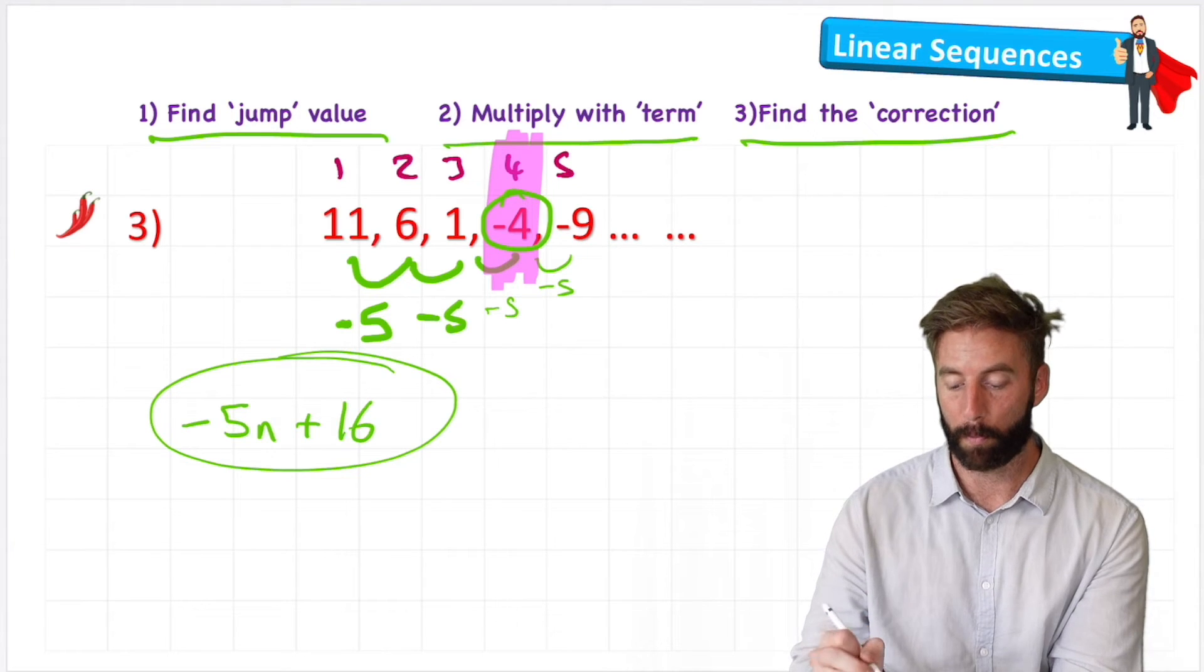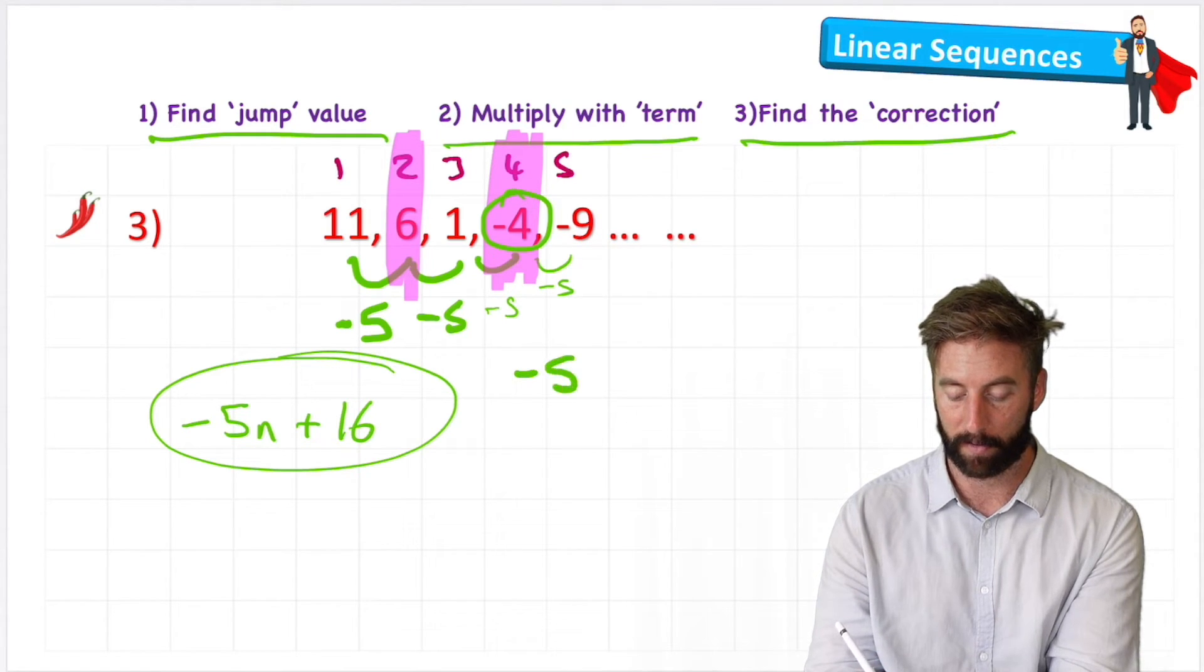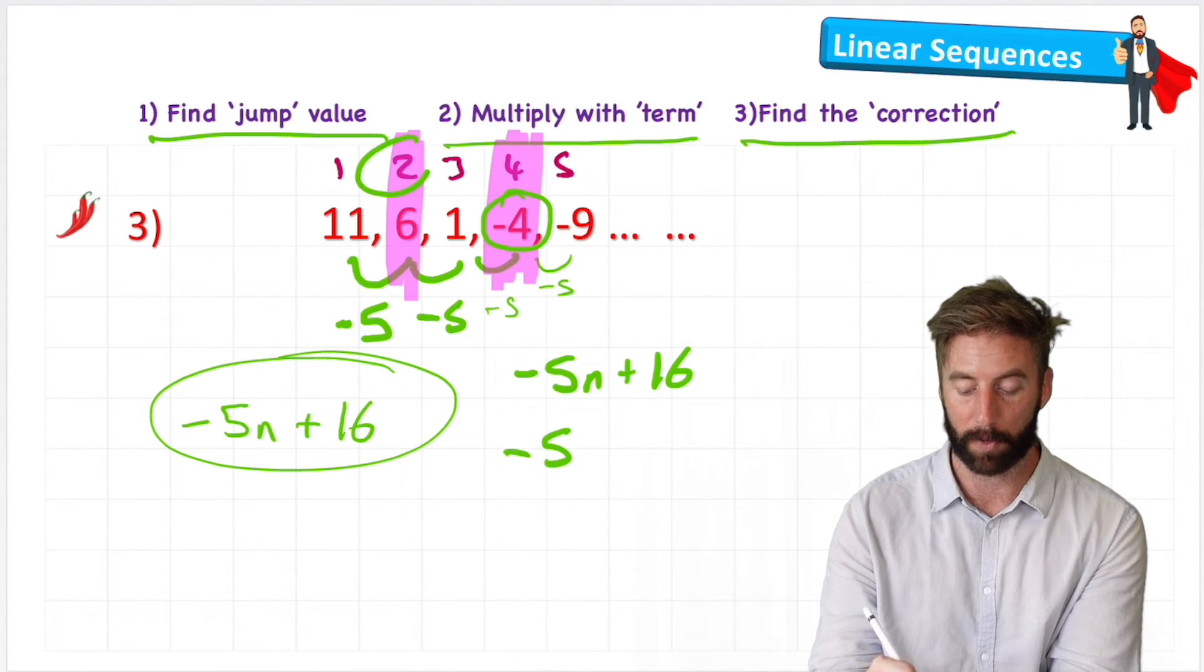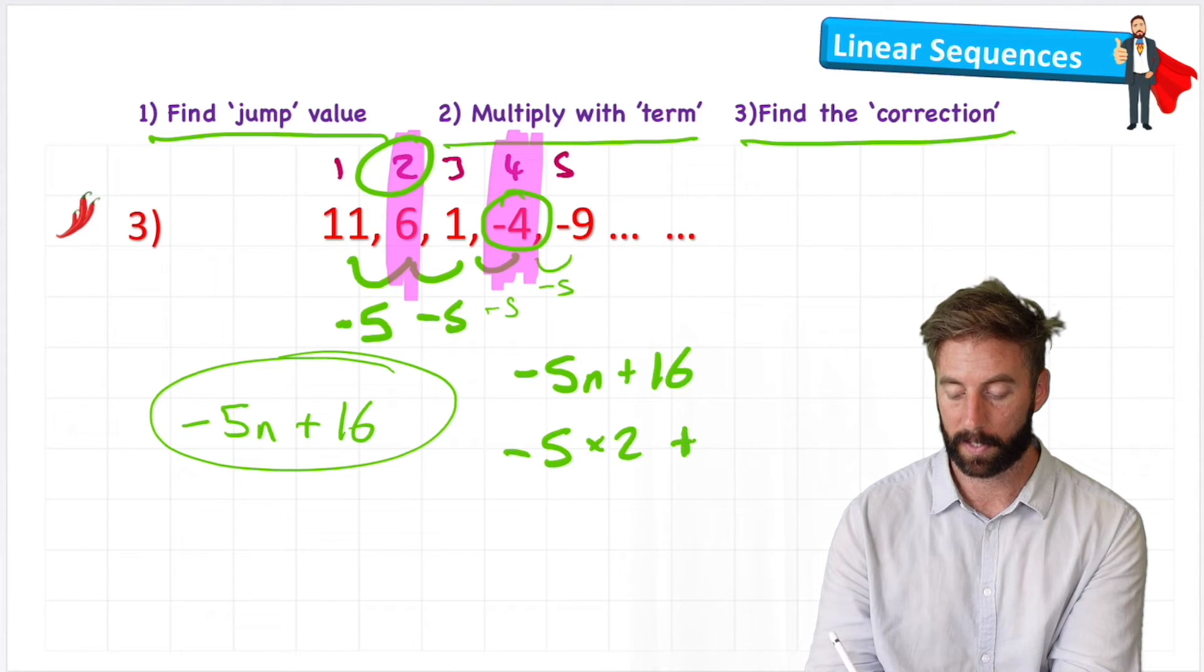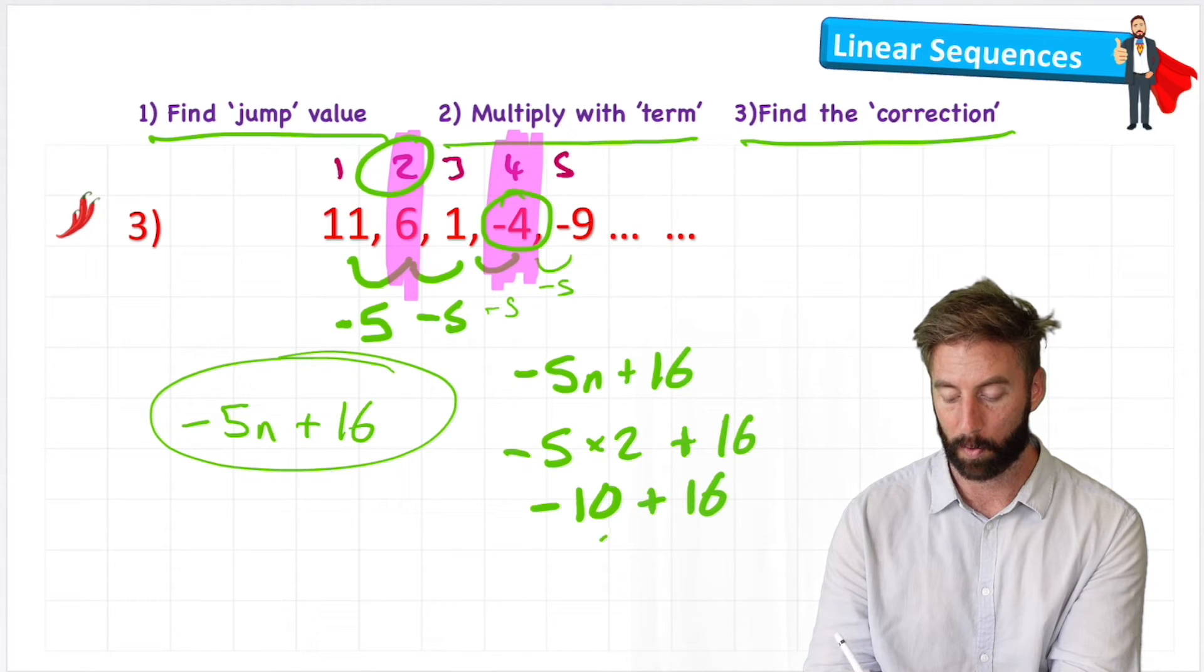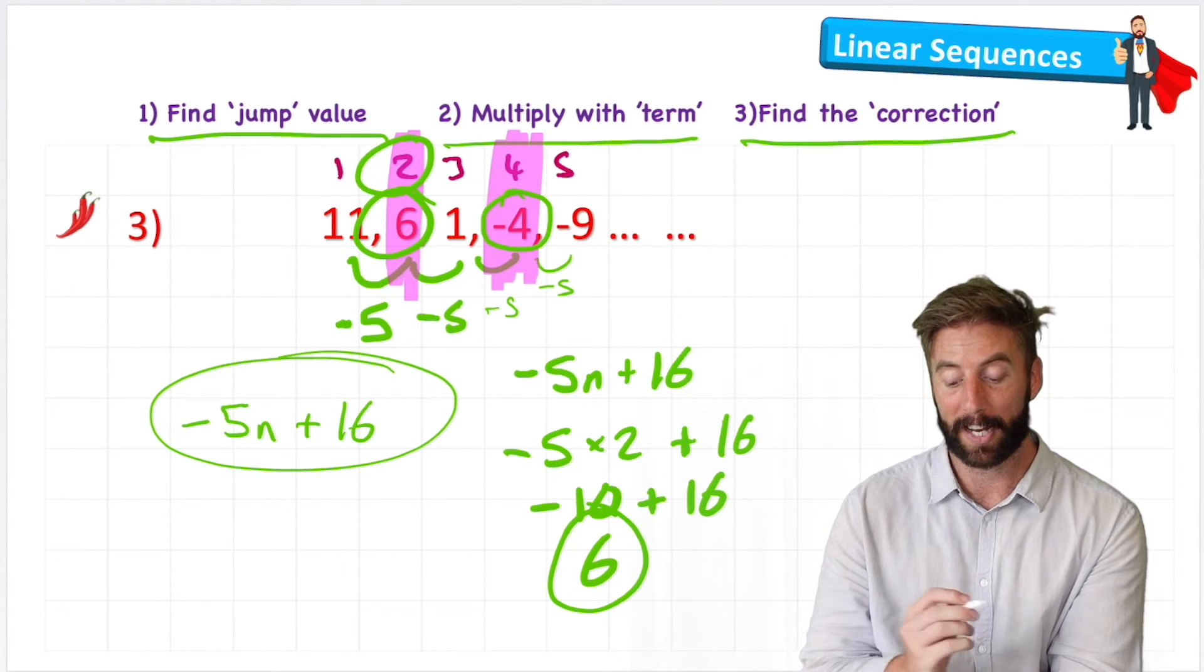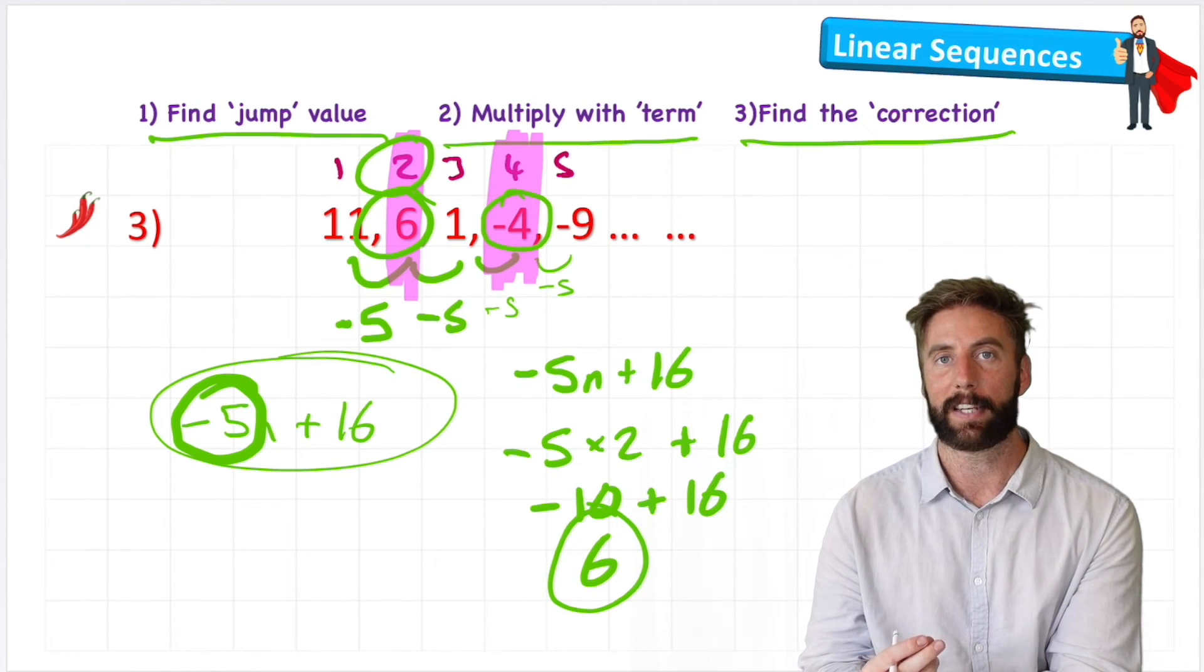Let's see if this formula works with one more in our examples. Let's have a look at the second term. So starting again with my formula, negative 5n plus 16. So negative 5, replace the n with my term, which is 2. Negative 5 times 2. Well, negative 5 times 2 is negative 10 plus 16. Again, BODMAS says do multiplication first. And negative 5 times 2 is negative 10. Negative 10 plus 16 equals 6. The right answer. So it does work with negative numbers too.